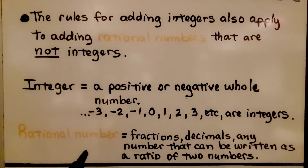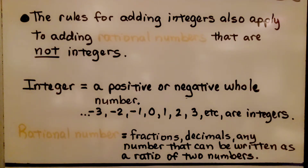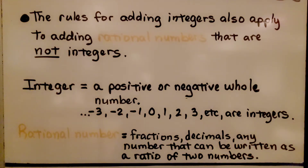Rational numbers are fractions, decimals — any number that can be written as a ratio of two numbers with a numerator and denominator. That would be a rational number. Just remember the denominator can't be 0.